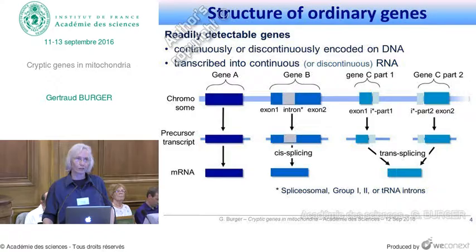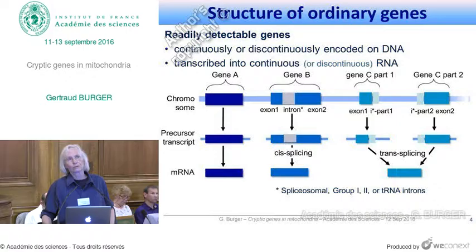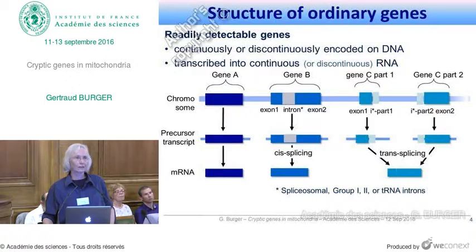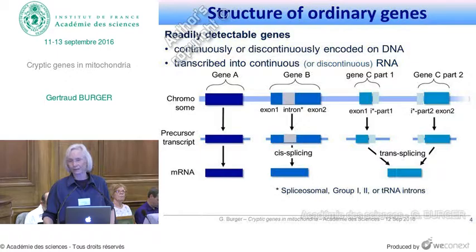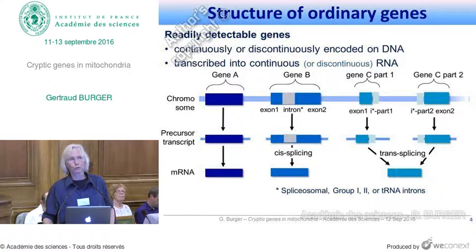On the right side, you see a more rare case where a gene has been broken into two pieces, probably by genome rearrangement. Since part 1 and part 2 are far apart, these two pieces are transcribed independently. Then the splicing machinery — be it group 1, group 2, spliceosomal, or tRNA intron splicing machinery — will put together the two exons into a contiguous messenger RNA. This last case is rare, but has been observed for all four intron types.